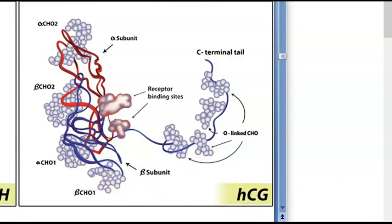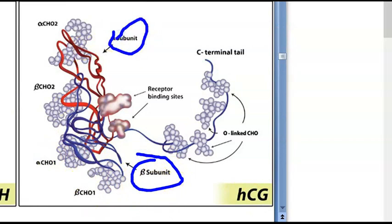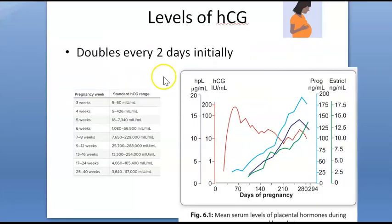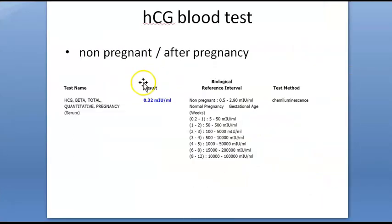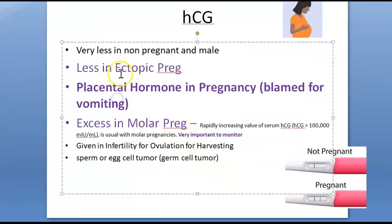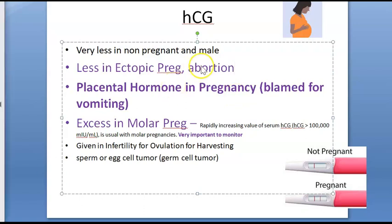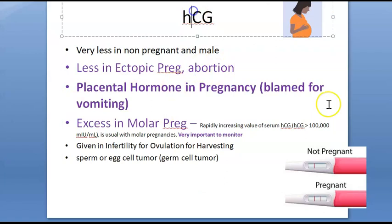HCG has an alpha subunit and a beta subunit — that is why it is referred to as beta HCG. Regarding HCG levels: low HCG can indicate an ectopic pregnancy or a spontaneous abortion.